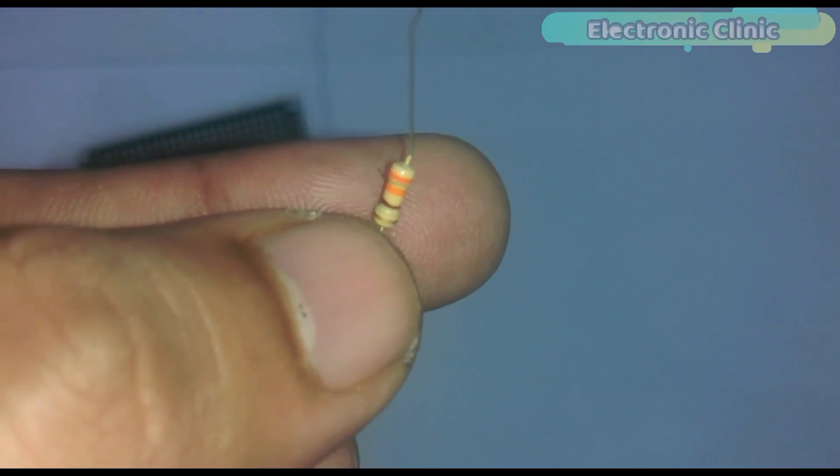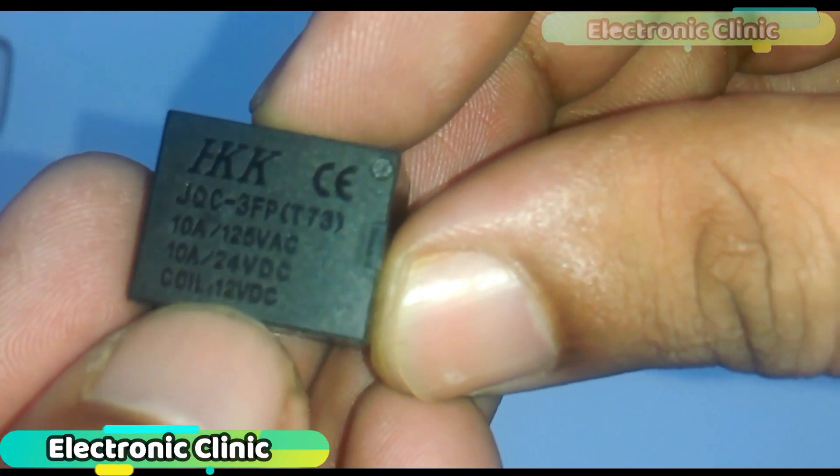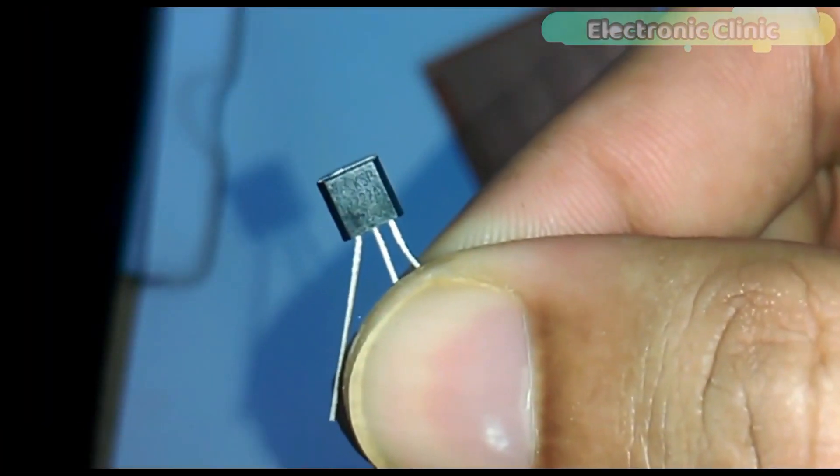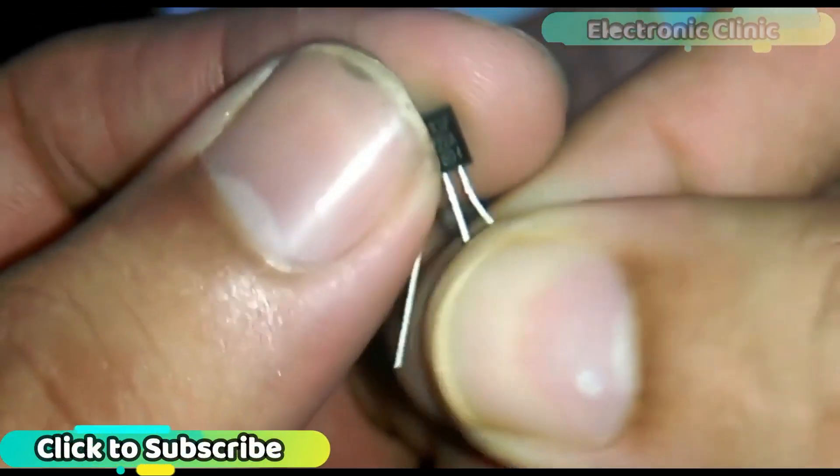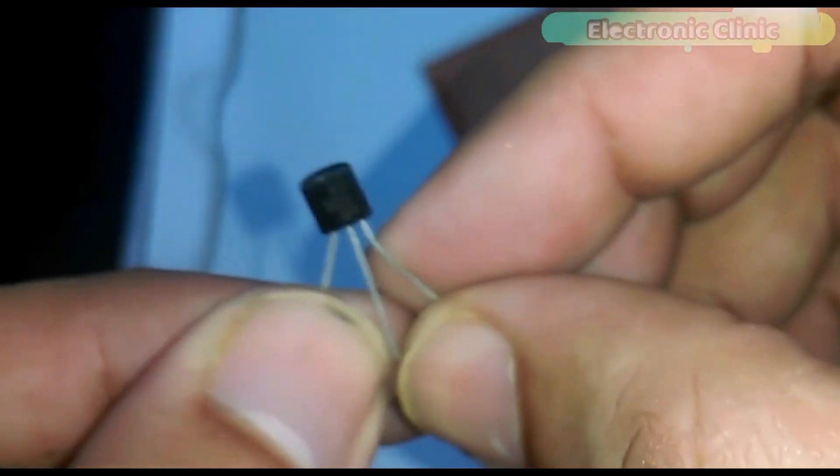Number seven 330 ohm resistor. Number eight 12 volt SPDT type relay. Number nine 2N2222 NPN transistor. The left leg is the emitter, the middle one is the base and the right most leg is the collector.